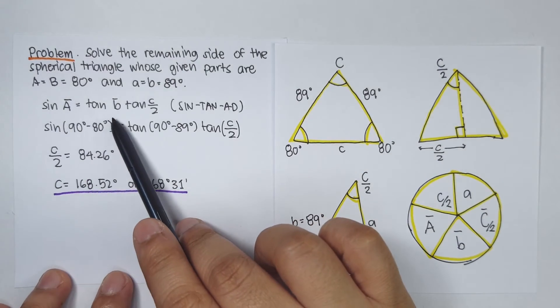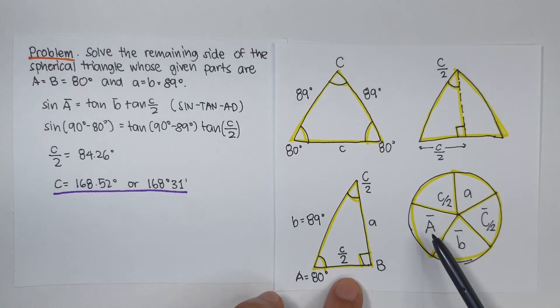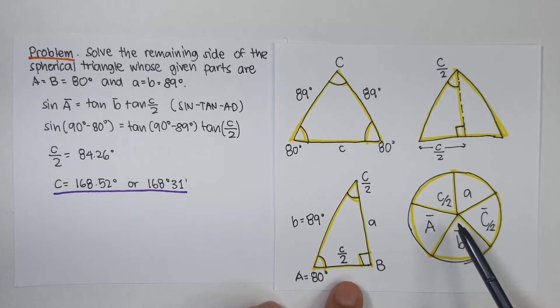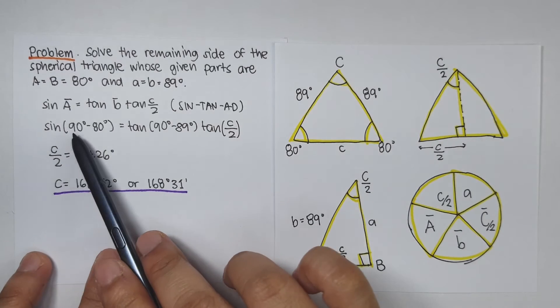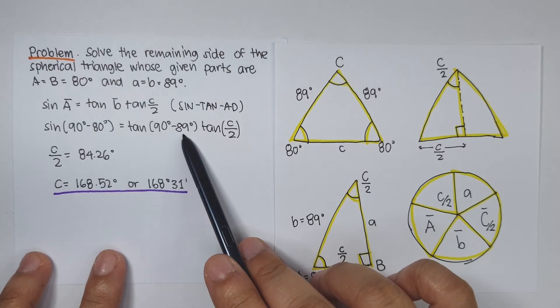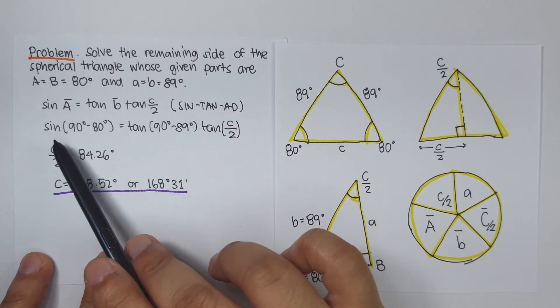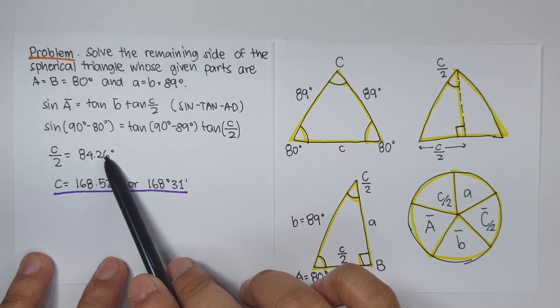Sin A bar is equal to tan B bar tan C over 2. So, sin of A bar is equal to tangent of its adjacents. So, we have sin(90 minus 80) equal to tan(90 minus 81) times tangent of C over 2. So, C over 2 is equal to 84.26 degrees.